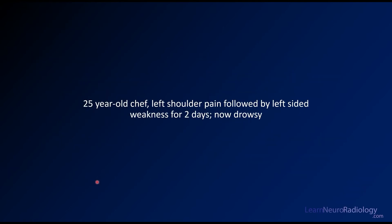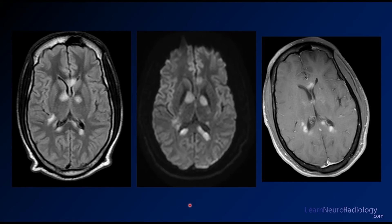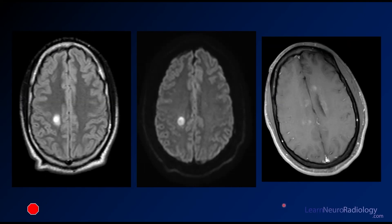For this next case, we have a 25-year-old chef who has been experiencing left shoulder pain and left-sided weakness for two days and now a little bit of drowsiness — so a younger patient. We see images through the brainstem and upper cerebellum. Note this little abnormality in the superior cerebellar peduncle on the left — it's a little bit abnormal on diffusion and has a little bit of enhancement. Going a little higher, that lesion is not isolated: you have lesions in both the basal ganglia, the corpus callosum, and some callosal lesions. On diffusion, these are pretty bright, with some enhancement — kind of fluffy, a little bit more peripheral, around the periphery of some of these lesions. There are additional lesions in the periventricular white matter with a little bit of a rim of enhancement.